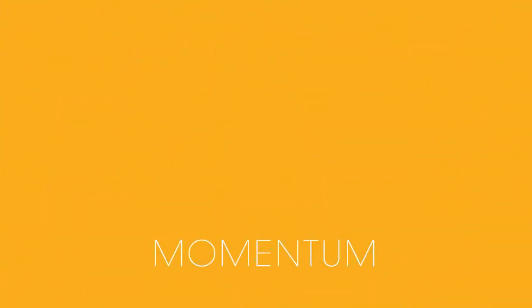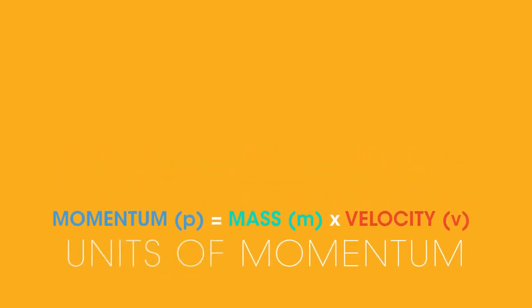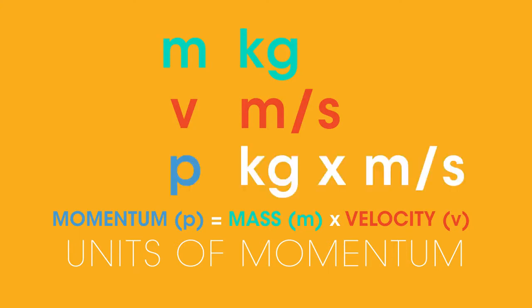We calculate momentum using this equation. Momentum p equals mass m times velocity v. So what are the units of momentum? Mass is measured in kilograms and velocity in meters per second. So momentum equals kilograms times meters per second, which equals kilogram meters per second.